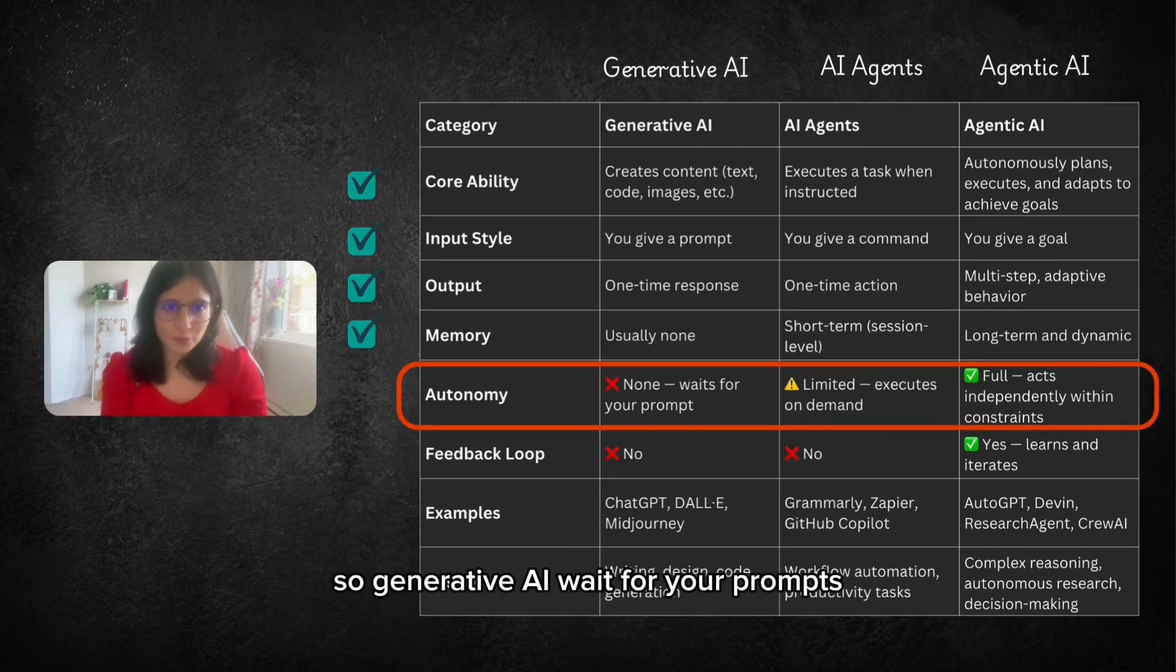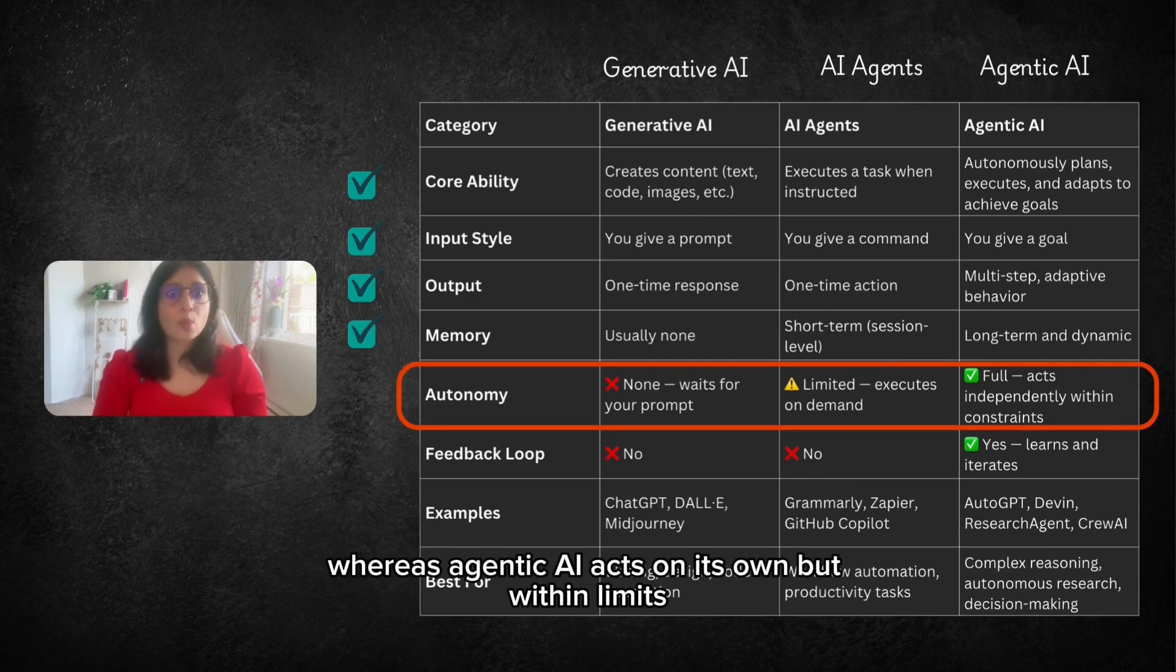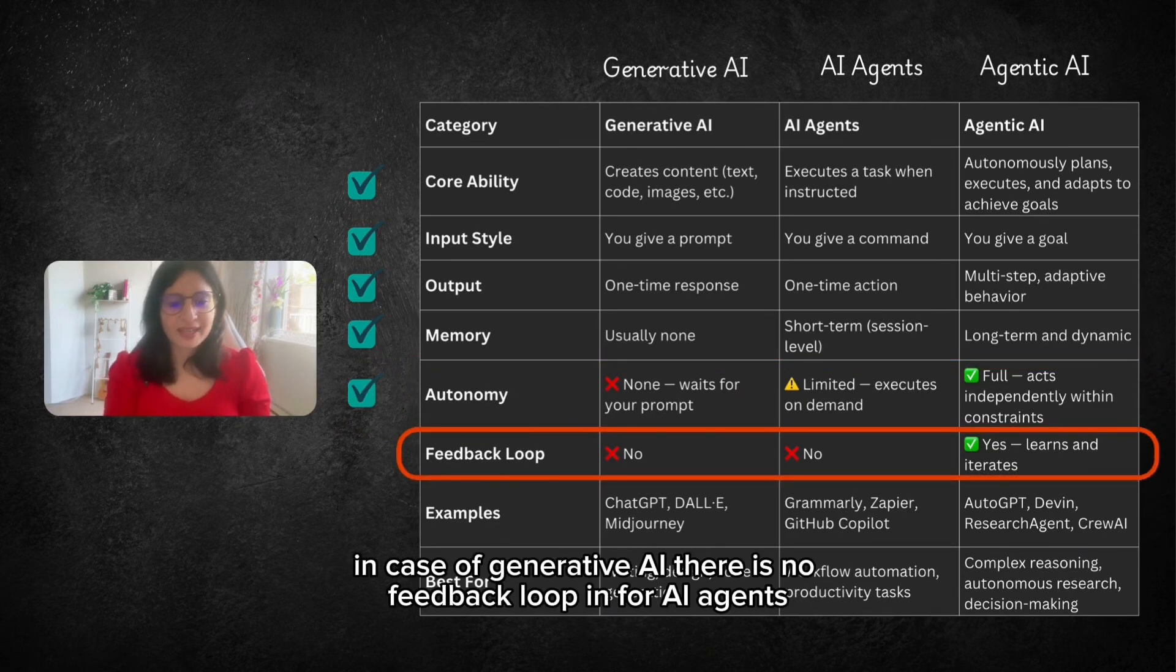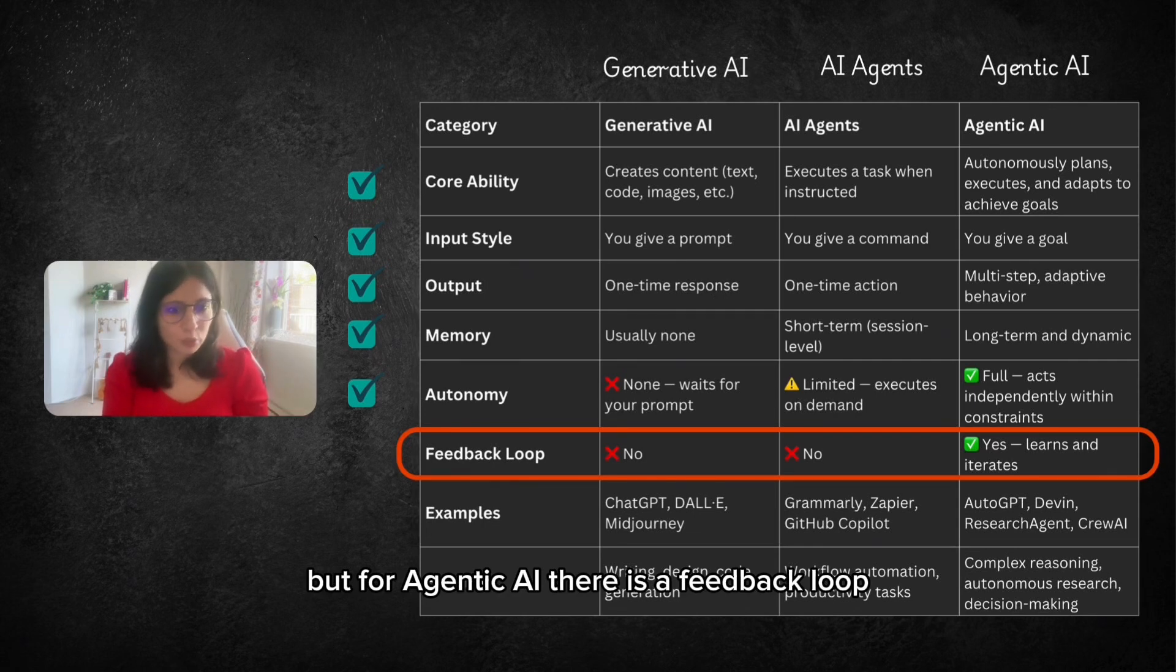So Generative AI waits for your prompts. AI Agents acts only once based on the command you have given. Whereas Agentic AI acts on its own but with the limits. In case of Generative AI there is no feedback loop. For AI Agents there is no feedback loop. But for Agentic AI there is a feedback loop.